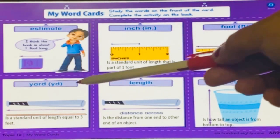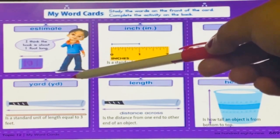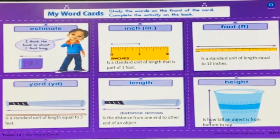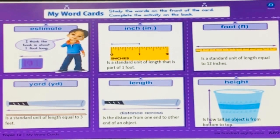The next word is yard. What is this? Yard. So yard is a standard unit of length equal to 3 feet. One yard is equal to 3 feet.